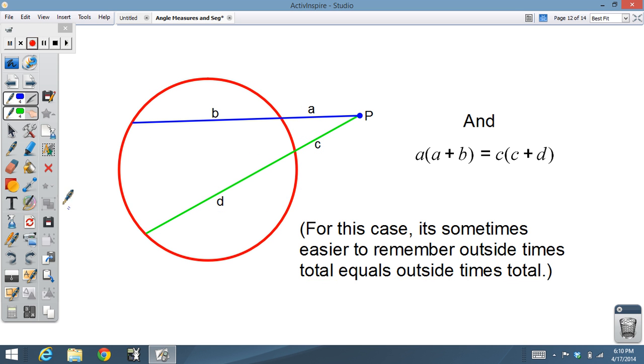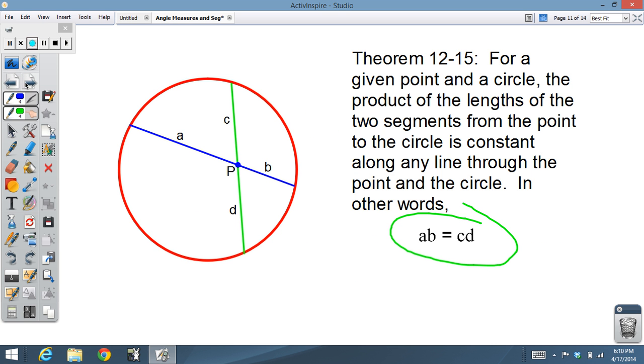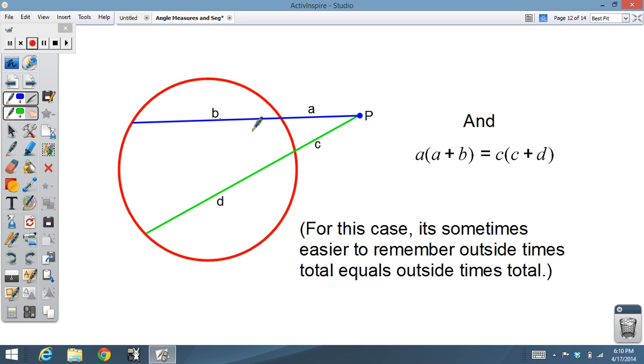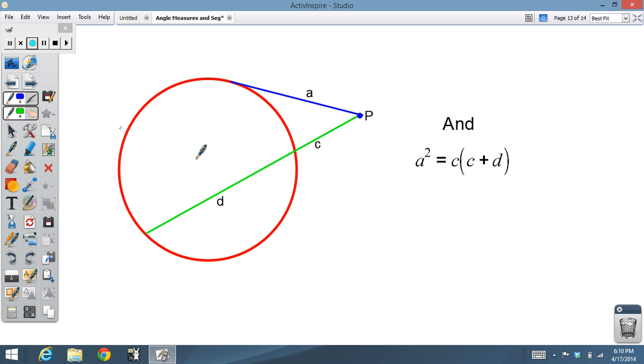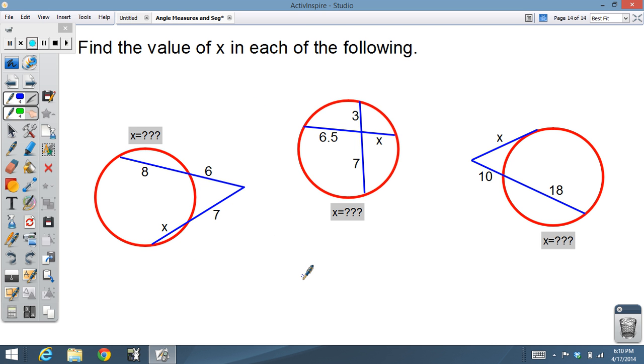That's going to be true no matter what, whenever we have two lines intersecting outside. So two lines intersecting inside, a times b equals c times d. Outside, we got a, the outside part times the total equals the outside part times the total. For a tangent, well, the outside part and the total are going to be the same, so that becomes a squared equals c times c plus d. Once again, some example problems. Pause it here if you want to try it on your own.